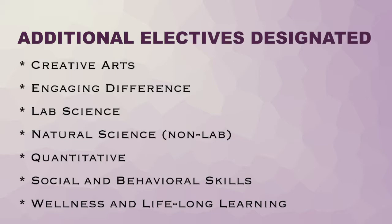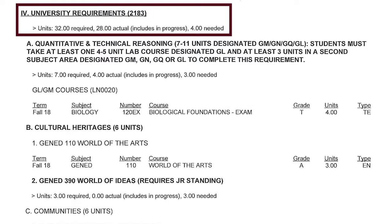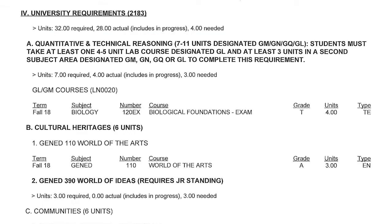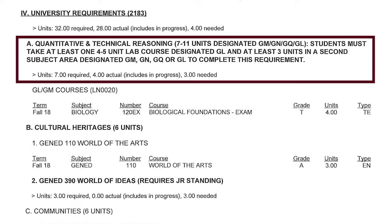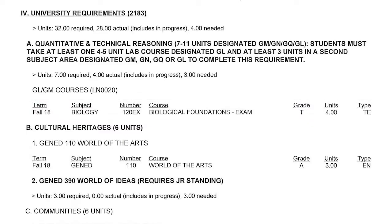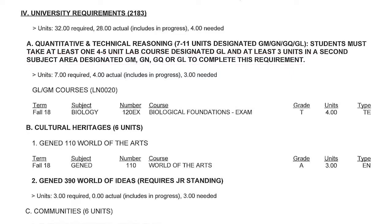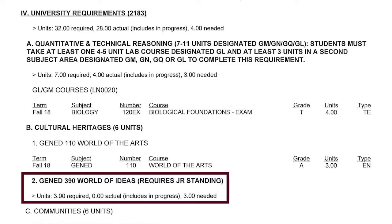Heads up — it's time to take a look at something that can throw you for a loop if you don't understand it. When we look at the university requirements section of this student's AAR, we see that they have earned 28 credits and have four credits to go. Let's take a look at the specific classes they still need to complete. Quantitative and technical reasoning says it still requires three credits. This student has AP credits for a biology lab class, so they need a three-credit course designated GM, GN, GQ, or GL in any area other than biology. They also need Gen Ed World of Ideas, a three-credit required core education course.